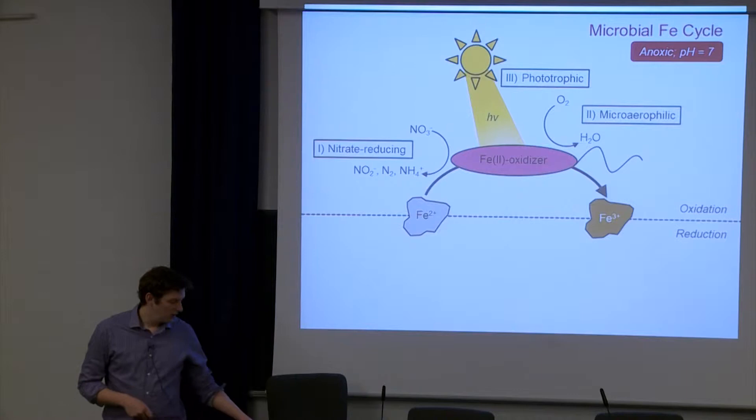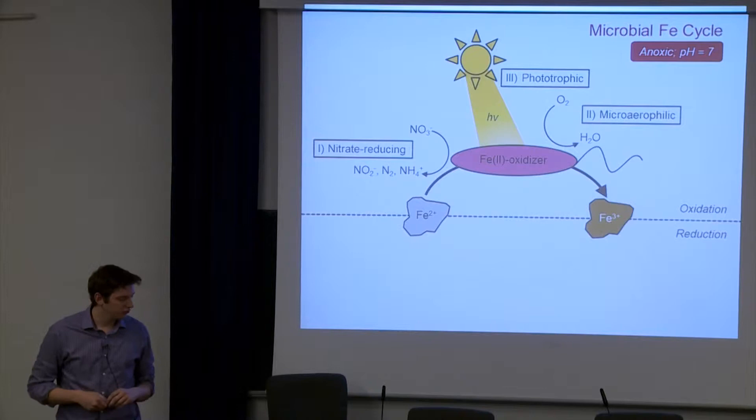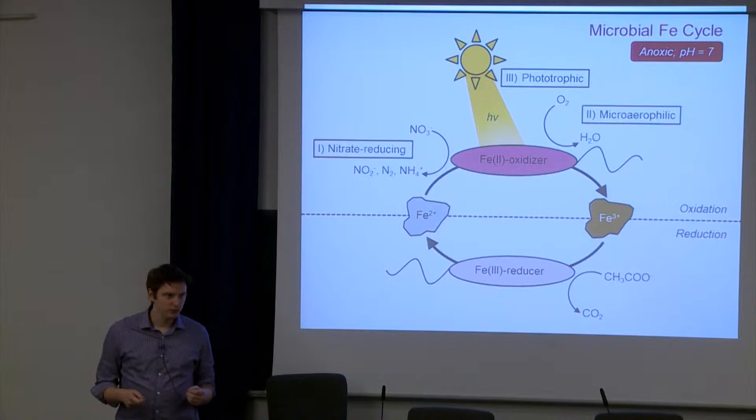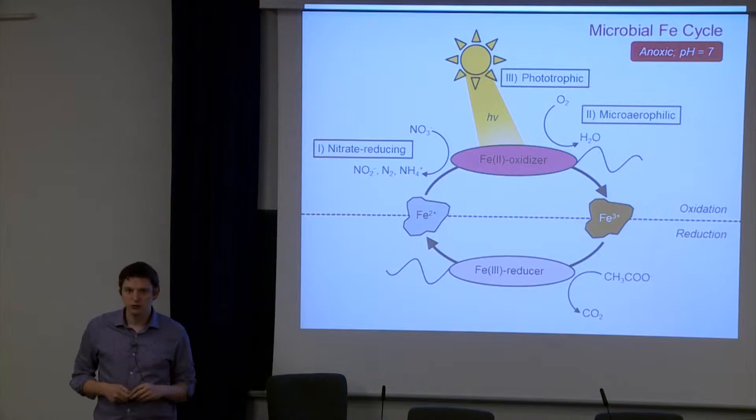Bear in mind, this is all pretty much happening at anoxic conditions at neutral pH. On the other side of the cycle, we've got the iron-reducing bacteria. These combine the oxidation of organics such as acetate or lactate, leading to formation of iron 2. This can also be done with hydrogen. These encompass bacteria such as Geobacter sulfurreducens or Shewanella, which some of you may have heard of before.